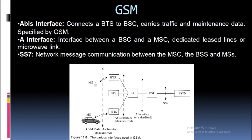GSM interfaces — Abis interface connects a BTS to a BSC, carrying traffic and maintenance data, as specified by GSM. The A interface is the interface between a BSC and an MSC, using dedicated leased lines or a microwave link. SS7 is the network message communication protocol between the MSC, the BSS, and MSS.